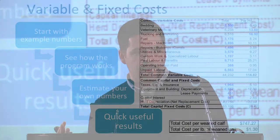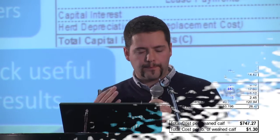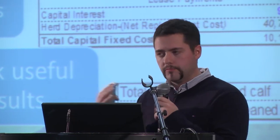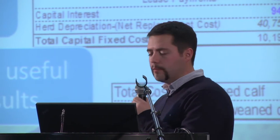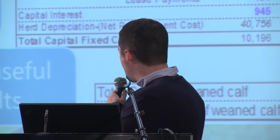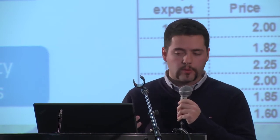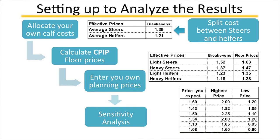Then we look at the costing side — adding in variable and fixed costs for the operation: bedding, veterinary costs. The program itself starts with the agri-benchmark numbers, so if you don't have all the details, you can use the area average numbers. But the best part, once you start playing around with this tool, is getting to the point where you're using your own numbers to make decisions. You can estimate your own, though they're sometimes difficult to pull right out of accounting information — try to get as close as you can. It will generate quick useful results: you can already see your cost per pound of weaned calf and total cost per calf.